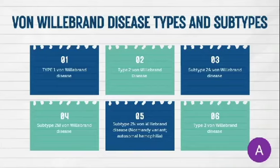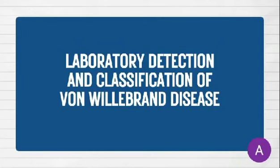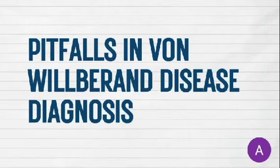Definitive diagnosis of von Willebrand disease depends on a combination of personal and family history of mucocutaneous bleeding and laboratory demonstration of decreased von Willebrand factor concentration or activity. Von Willebrand factor antigen may employ enzyme immunoassay methodology. Pitfalls in von Willebrand disease diagnosis include varying genetic penetrance; ABO blood group, inflammation, hormones, age, and physical stress all influence von Willebrand factor activity.